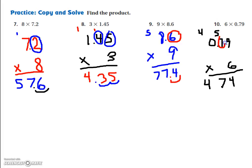So I'm going to circle all the numbers after my decimal and I count them. 1, 2. And I put my pencil at the end, and I go 1, 2. That's my answer, 4.74. That's how you multiply decimals by whole numbers.